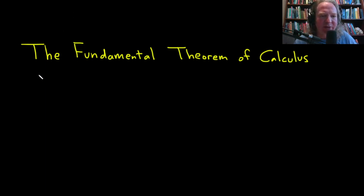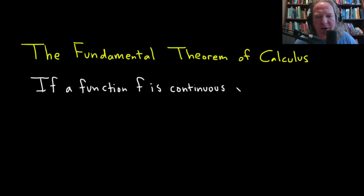The theorem is stated as follows. If a function, which we'll call little f, is continuous on the closed interval [a,b], and big F is an antiderivative of little f on [a,b],